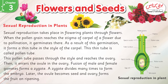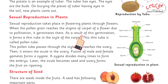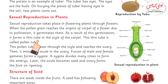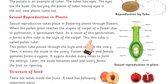What happens here? When it gets a suitable temperature and water, the germination starts. As a result of this germination, it forms a thin tube in the style of the carpel. This thin tube is called the pollen tube.